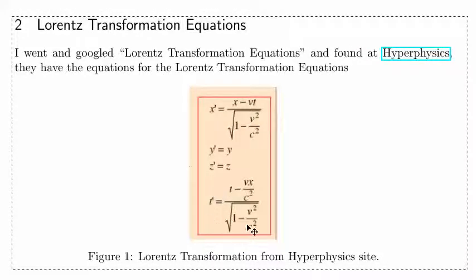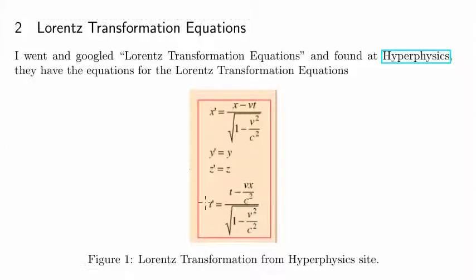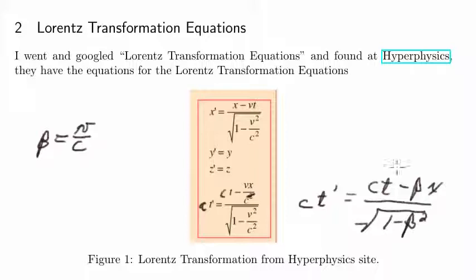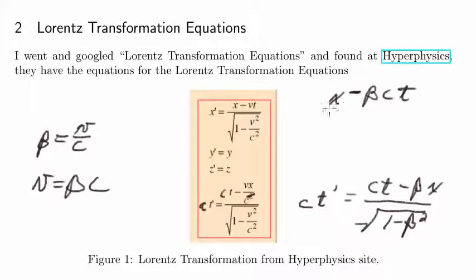To achieve a bit more symmetry in these equations, I'm going to multiply the equation regarding t prime by the speed of light c — multiplying this by c and this by c, so that c cancels out — giving ct prime equals gamma times (ct minus beta x) over the square root of 1 minus beta squared, where beta is v over c.